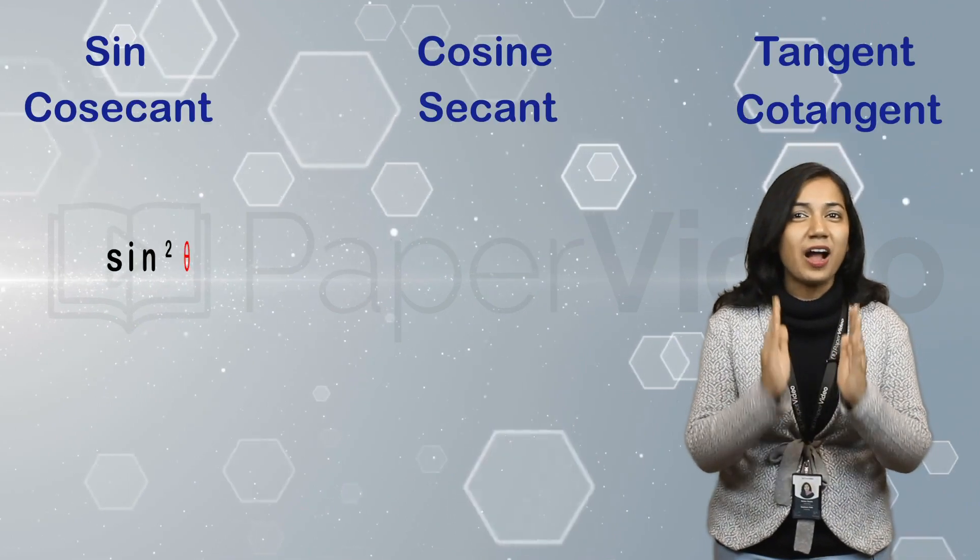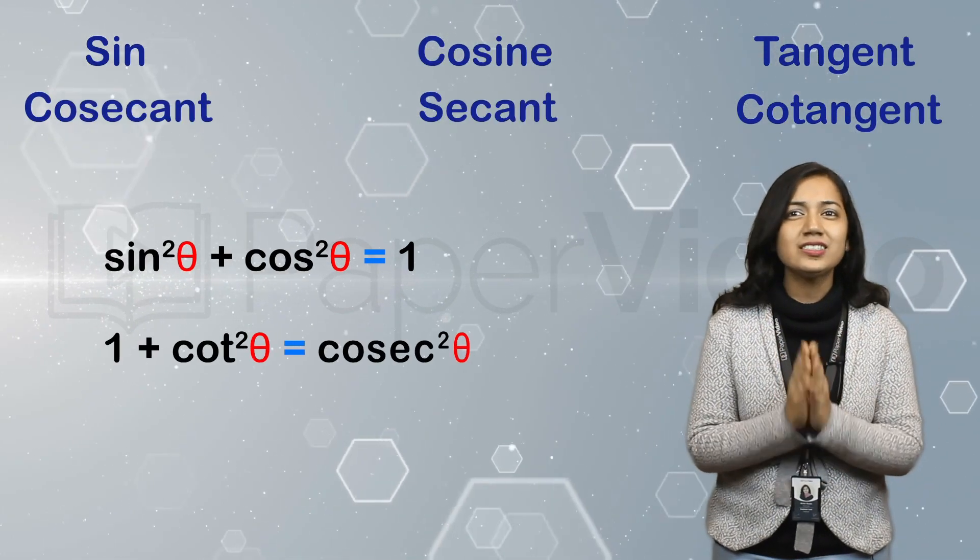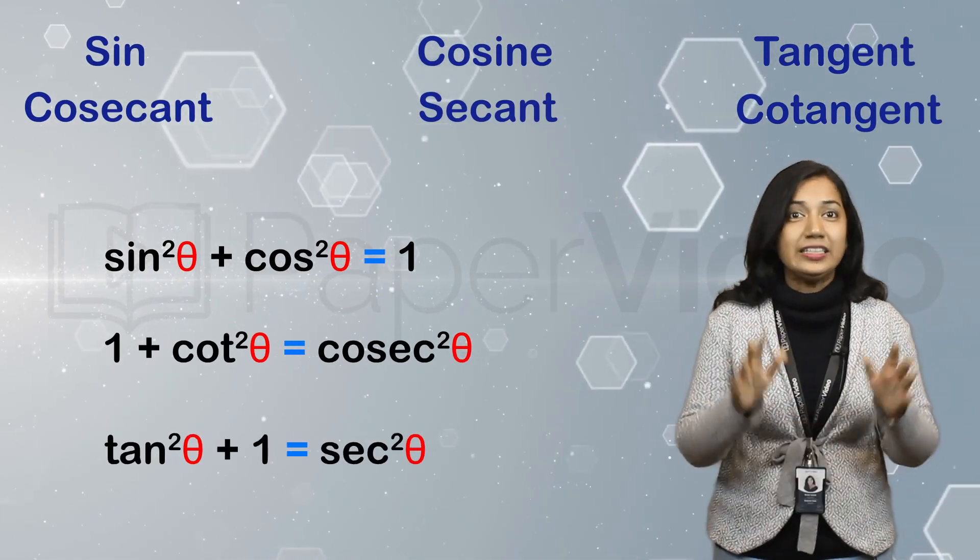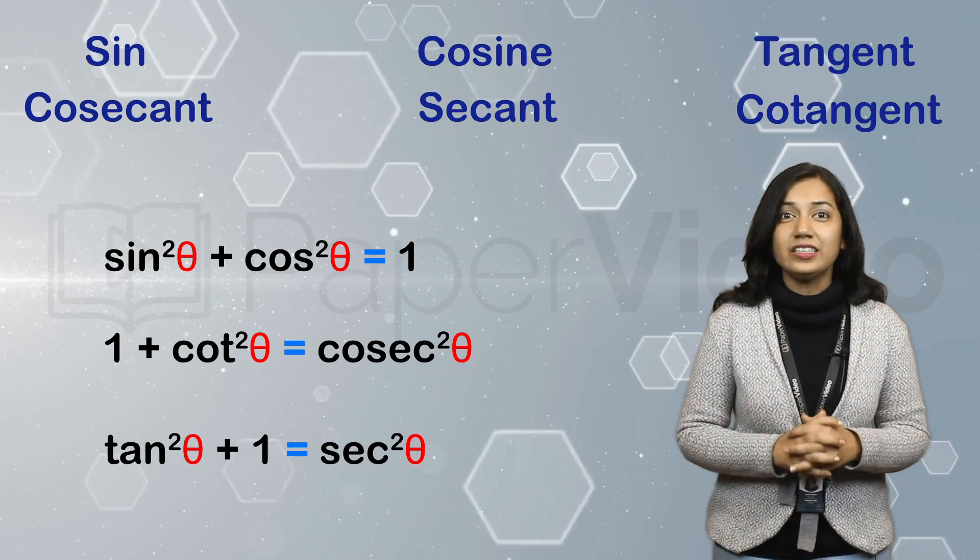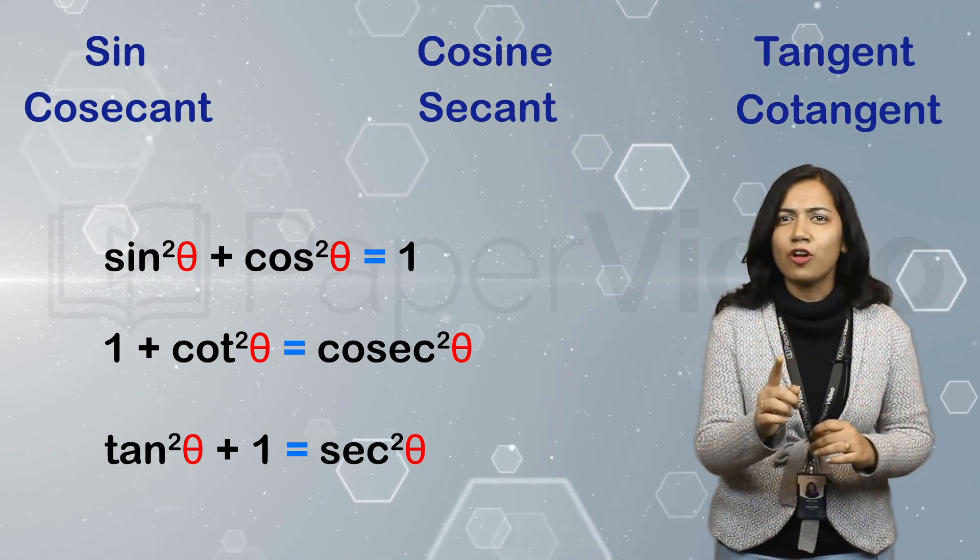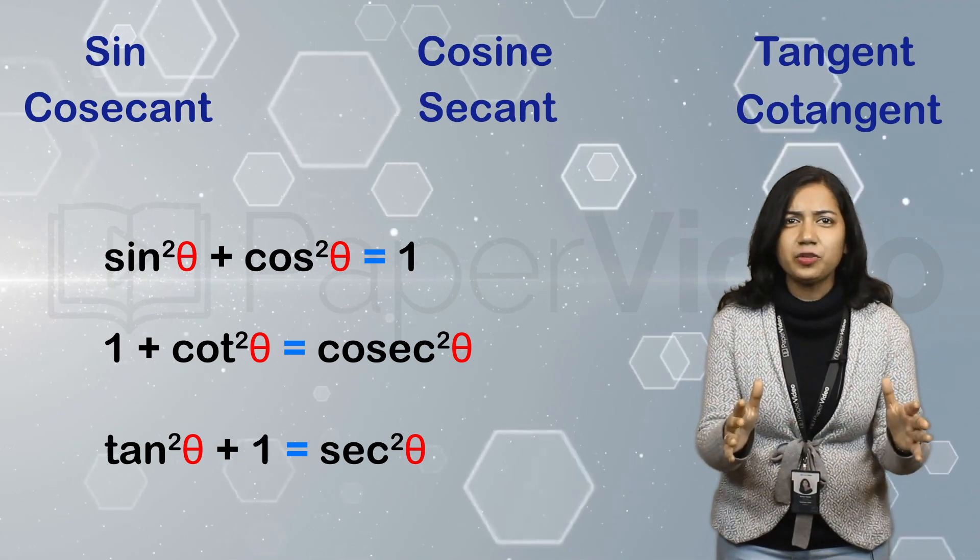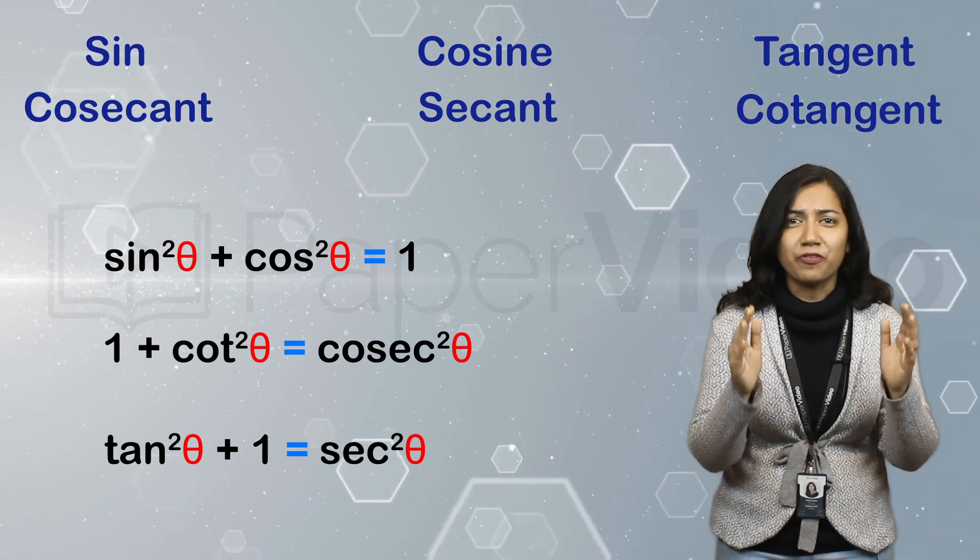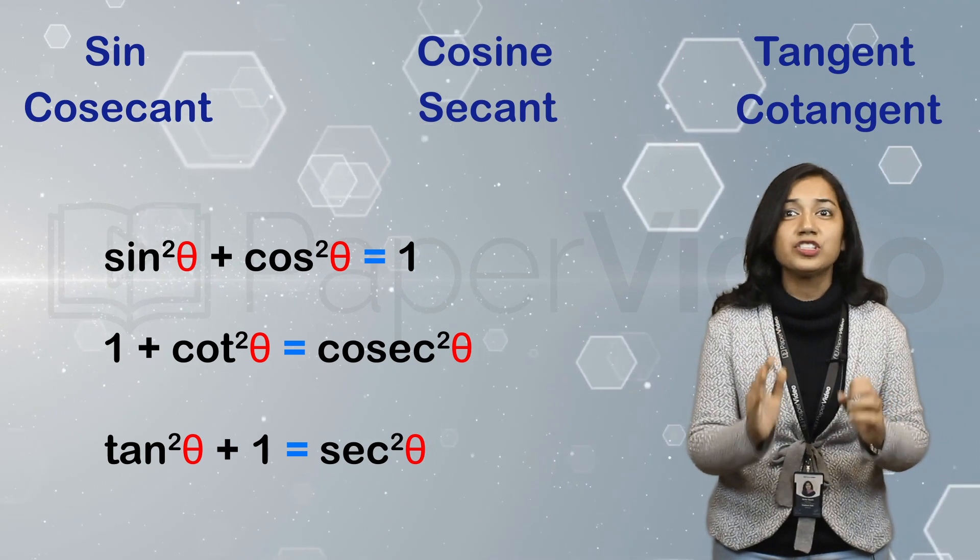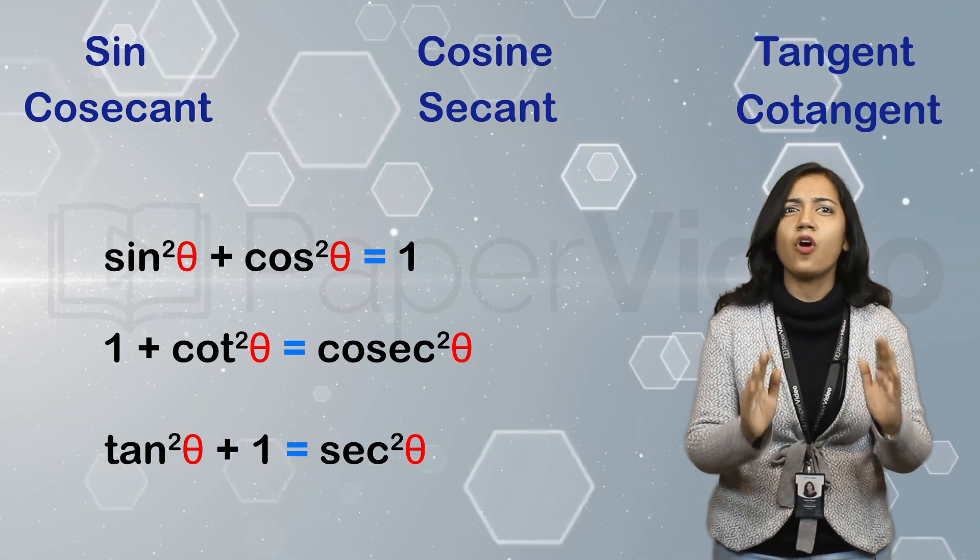But do you know there are some identities involving these six trigonometric ratios? Yes, these three identities are very important for solving various questions in trigonometry. These trigonometric identities are in the form of equalities which are true for every value of the angle.